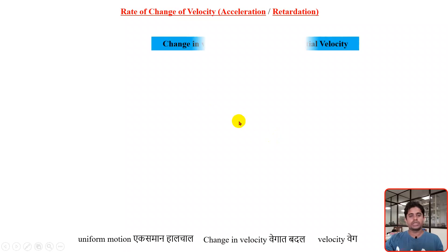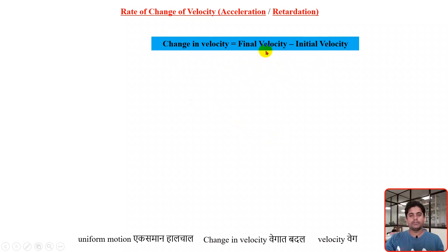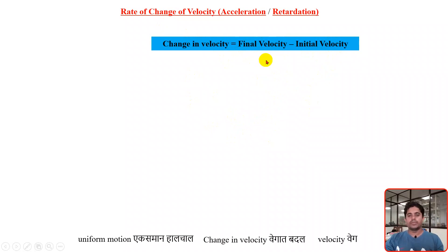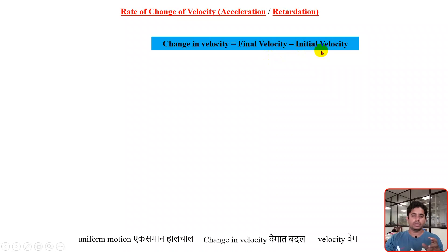Hello everyone. In the last video we discussed about change in velocity. Change in velocity is nothing but the difference between the final velocity and the initial velocity of the object. The object has done a journey, and during that journey the final position where the object has achieved some velocity is the final velocity, and initially when the journey started, that velocity is the initial velocity. The difference between those two velocities is the change in velocity.